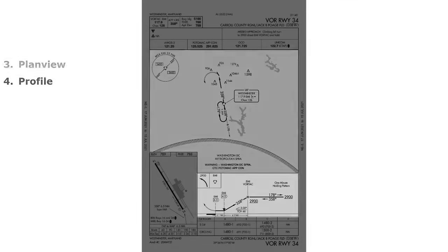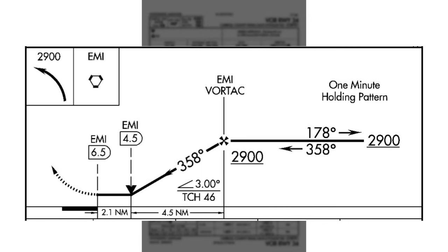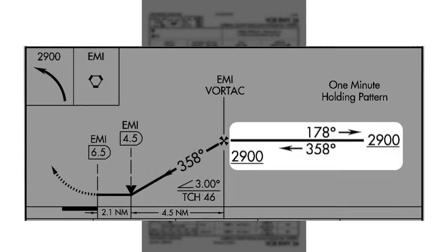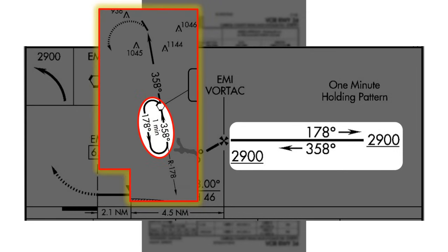After the plan view, we have the profile view — the fourth section. This has much of the same information as the plan view, but rather than a top-down view, we're looking at it from the side. This shows the vertical approach path. The same approach segments appear here: the hold in lieu of procedure turn is the same as before, just depicted from the side rather than the top.